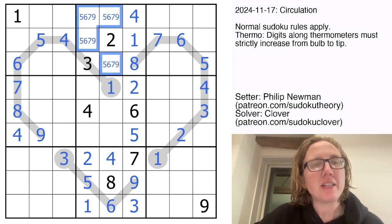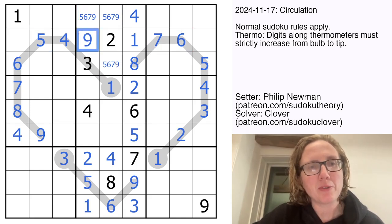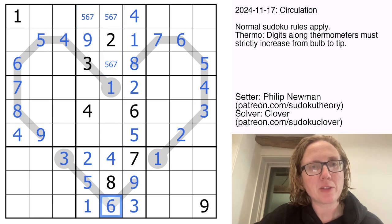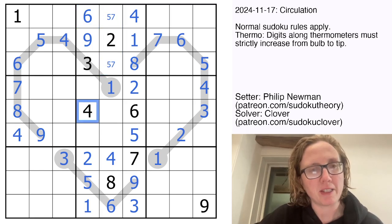Now I need five six seven and nine in this region and I already have five six and seven in this row so my nine will go right there and then I have a six right here so the six has to go right there.